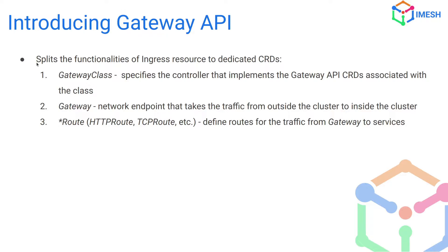Now let's have a look at the Gateway API. Gateway API does all the same things that Ingress does, but it uses different CRDs. We have a few CRDs available: a Gateway Class, which is used to specify the controller implementing the Gateway API; a Gateway, which binds the listeners for external traffic; and HTTP routes and TCP routes, which define the routing rules for traffic coming through the gateway. All of these work together to manage traffic in the cluster.